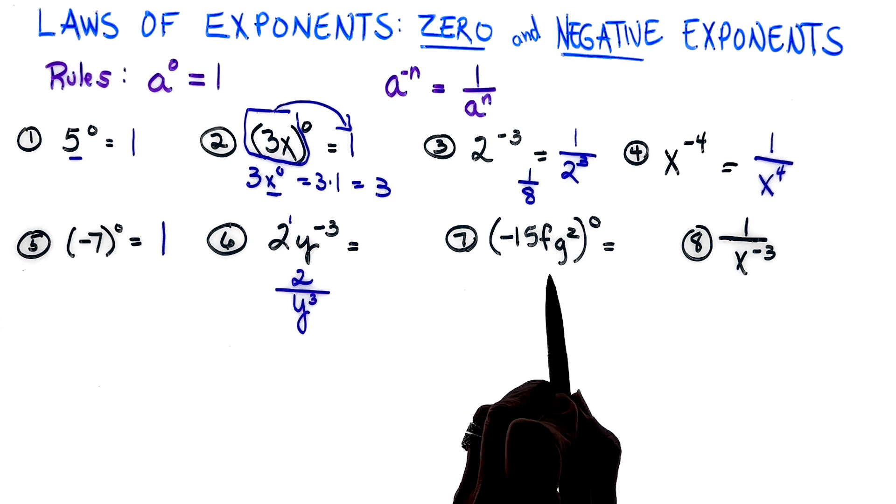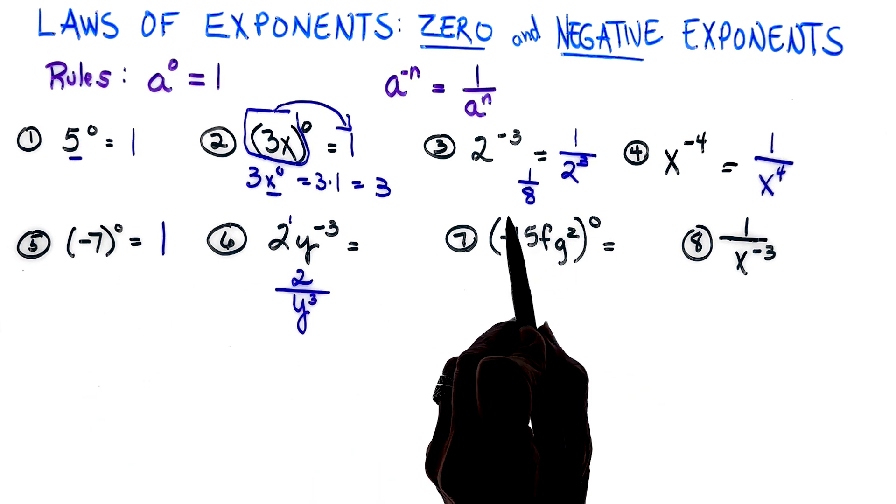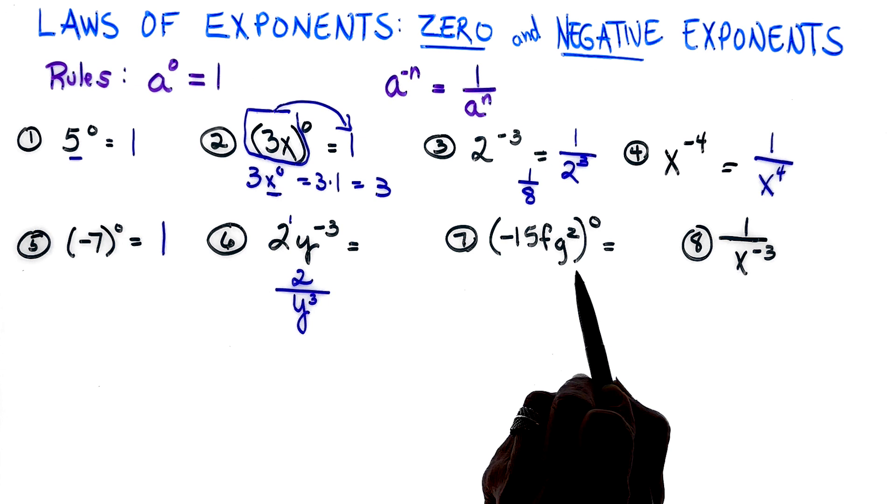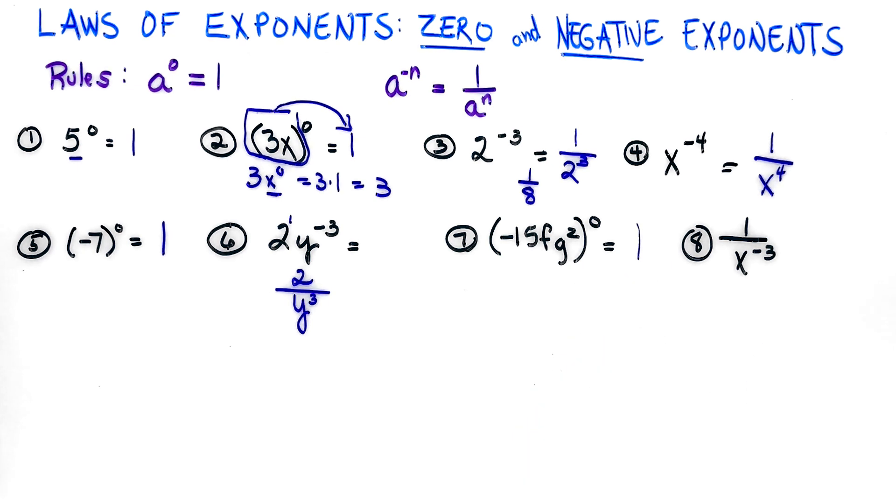Number seven: again, all of this is in the bracket, so the answer is one.